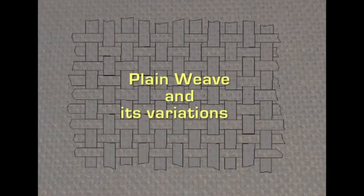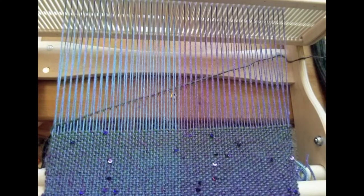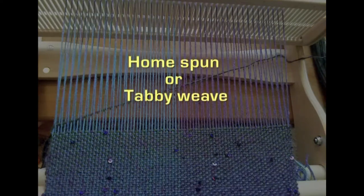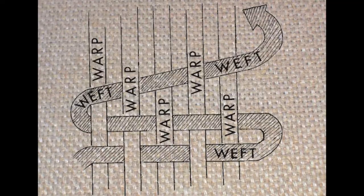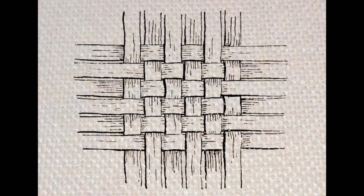Plain weave is the simplest of all the weaves and is sometimes referred to as homespun or tabby weave. The interlacement is very simple: the first filling yarn goes over and under one warp yarn, and when the second filling yarn goes, it goes under the first warp yarn where the first filling went over. Across the fabric, each filling yarn goes over and under one warp yarn, and thus the fabric resembles a checkerboard pattern.